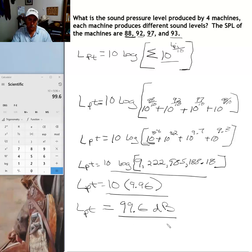Ninety nine point six decibels is the combined sound pressure level for these four machines. These four machines combined to produce ninety nine point six decibels of sound pressure.